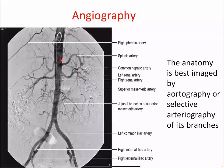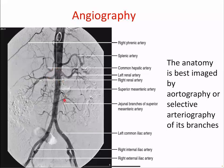On conventional angiography we can identify the splenic artery, the right and common hepatic artery and its branches, the left and right renal arteries, the branches of the superior mesenteric artery, and the common iliac and internal iliac arteries.